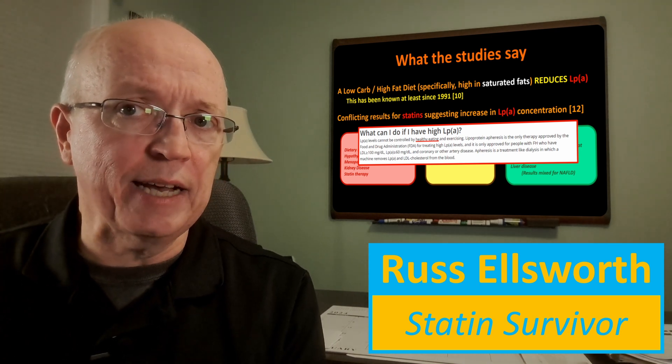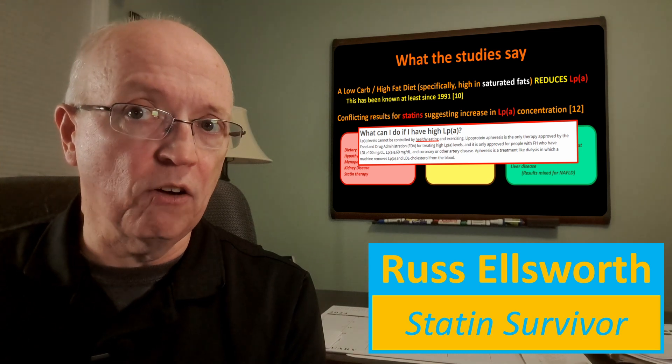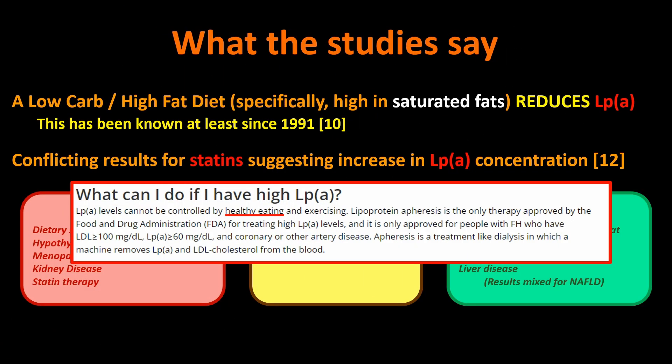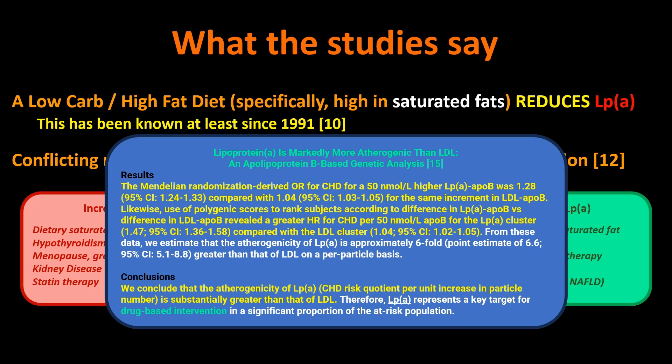While preparing for this video, a report arrived in my inbox entitled 'LP little a is markedly more atherogenic than LDL.' They did a genetic analysis and the final statement estimates that the risk of LP little a is approximately six times greater than that of LDL on a per-particle basis. LP little a is actually more important per particle for cardiovascular risk than LDL. Their conclusion: therefore, LP little a represents a key target for drug-based intervention.